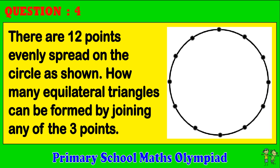Question 4. There are 12 points evenly spread on the circle as shown. How many equilateral triangles can be formed by joining any of the three points?